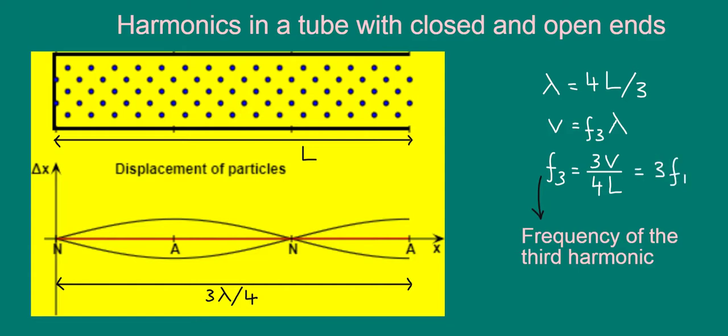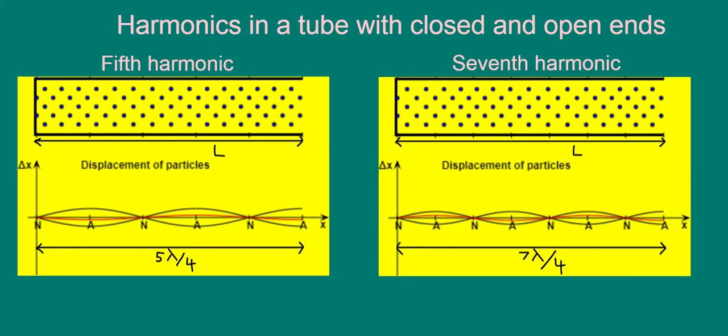Similarly, the next possible harmonics are the fifth and the seventh, which form at frequencies equal to five times and seven times the frequency of the first harmonic. Notice that only odd-numbered harmonics can form in the system.